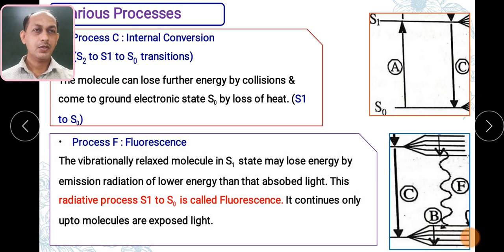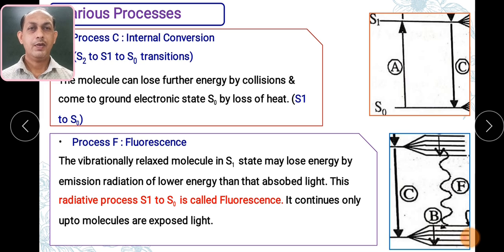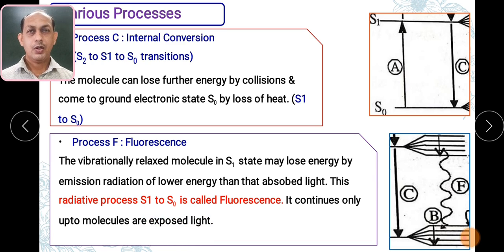The next phenomenon is fluorescence — a very important process. Here the molecule in S1 comes to S0, shown with wedge-shaped arrows. Fluorescence is a radiative process where vibrationally relaxed molecules in the S1 state lose energy by emission of radiation of lower energy than that of the absorbed light. This radiative process from S1 to S0 is called fluorescence. This particular process continues as long as the molecule is exposed to light, and you will observe the emission of radiation.